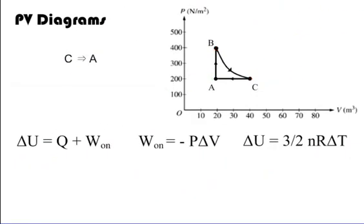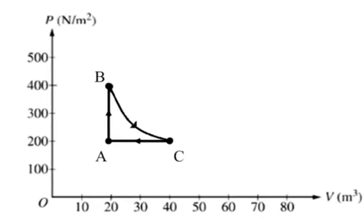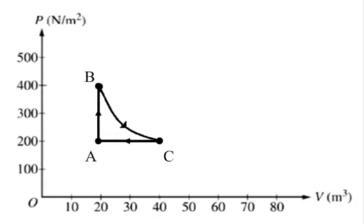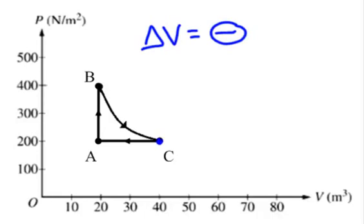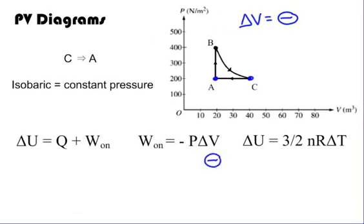The last segment is from C back to A. Pressure stays constant — this is called isobaric. The volume decreases from 40 to 20, so delta V is negative. With the negative sign in front, a negative of a negative becomes a positive — so the work done on the gas is positive during this segment.